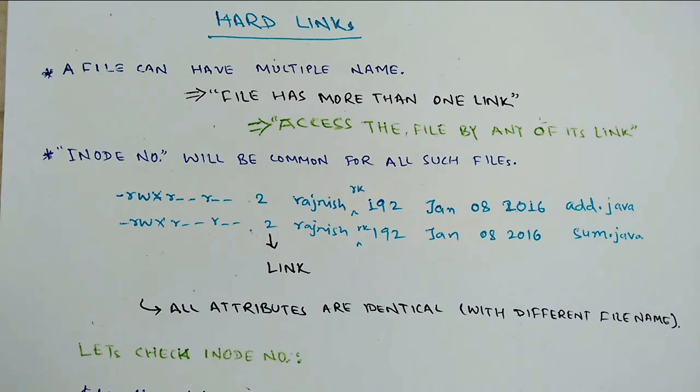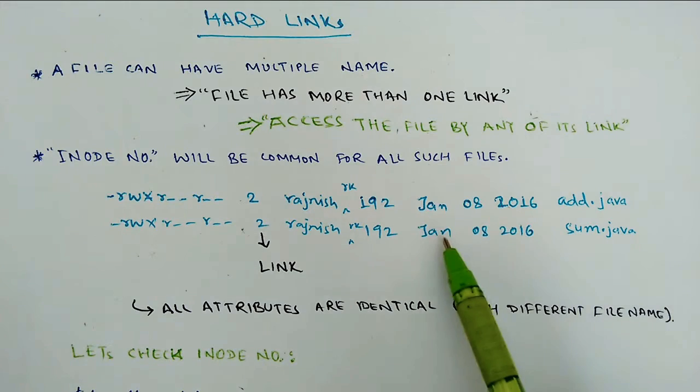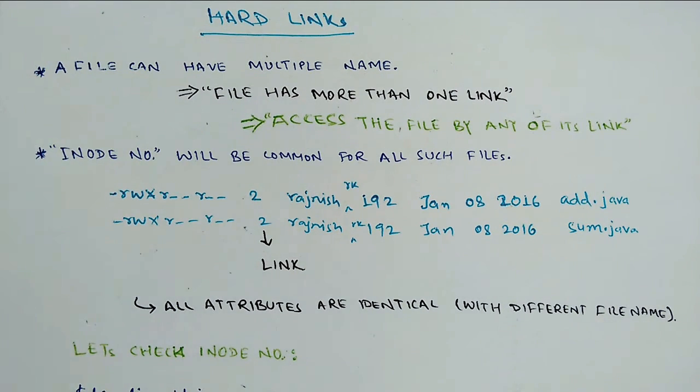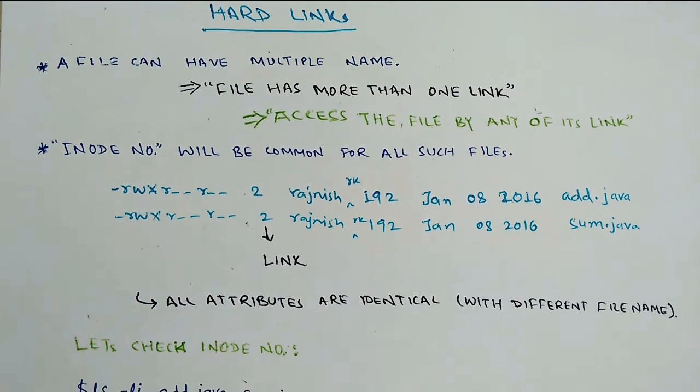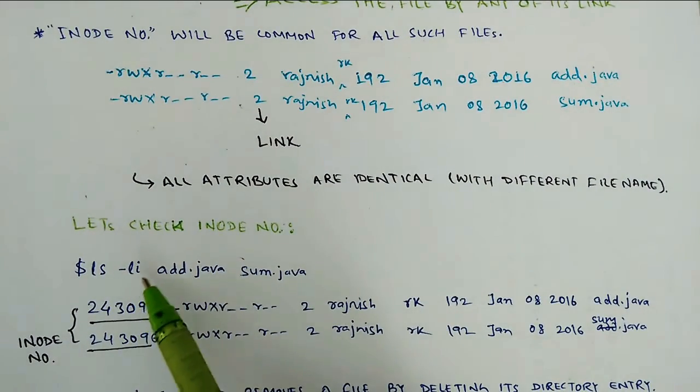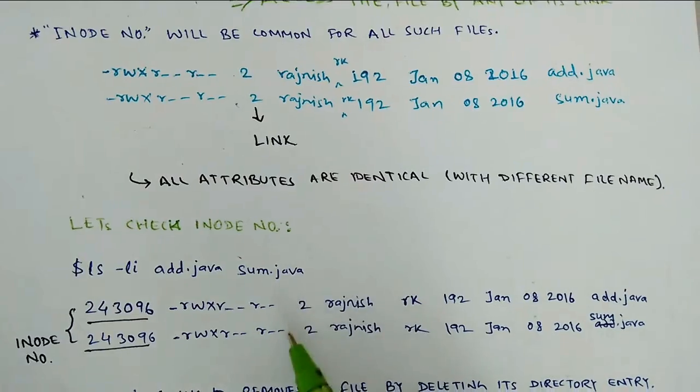We have multiple names. In this case, number of links will be 2. So all attributes are identical with different file names. Now you can see the date and size. Size is also the same. User and group ID is also the same.